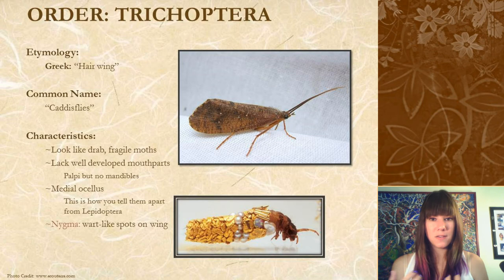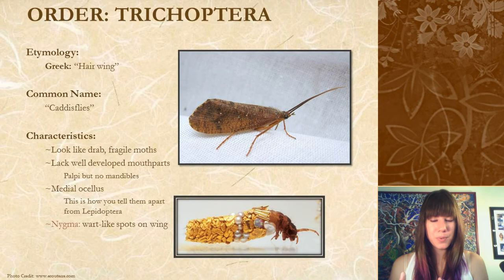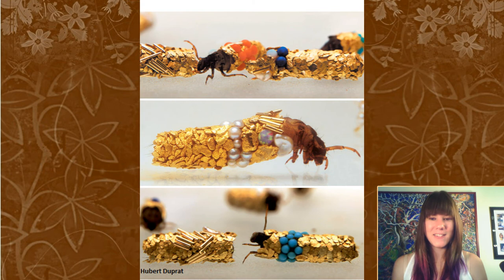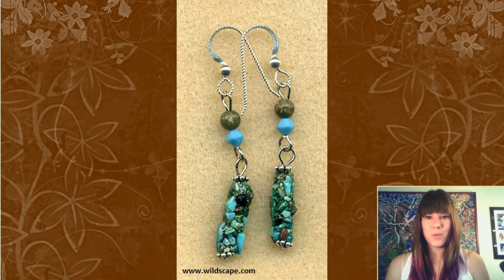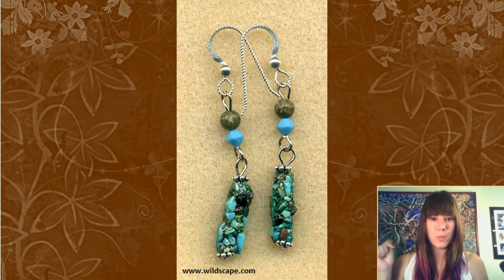Someone had the idea to take Trichoptera larvae and put them in a simulated pool of running water with gold, pearls, opals, and other gemstones at the bottom and let them make their casing out of these materials. Once the larva turns into a pupa and emerges as an adult and flies away, they take the leftover casing, glue them together, and make jewelry out of them. There's a link in the description to where you can buy them if you want your own insect-made jewelry.